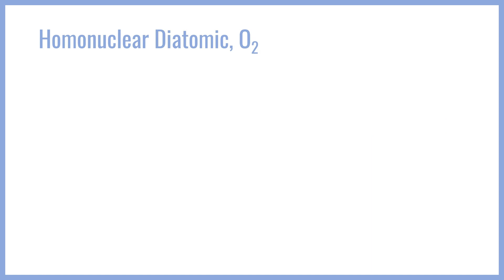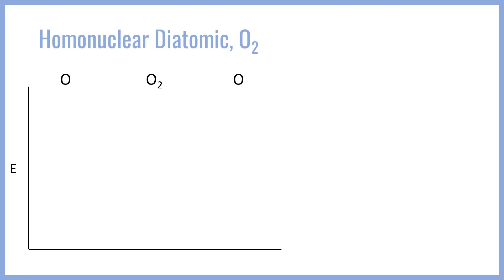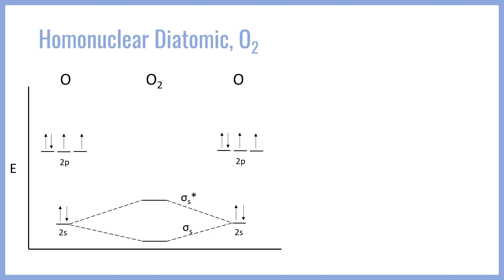We can now do the exact same thing for oxygen, O2. Again, we start by laying out our diagram and putting in the atomic orbitals. Oxygen has one more electron than nitrogen in its p sublevel. We go ahead and combine our two s orbitals into sigma star and sigma bonding orbitals just like we did for nitrogen, and fill those up. The two s orbitals fill both the bonding and antibonding pair and are eventually going to cancel each other out. Once again we're left with three p orbitals, and we're going to have the same one sigma and two pi interactions based on the geometry of the p orbitals.